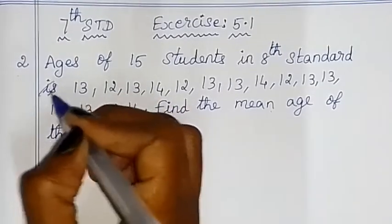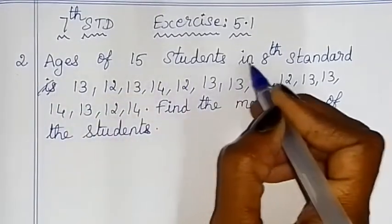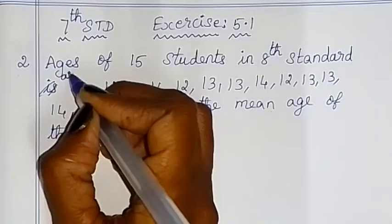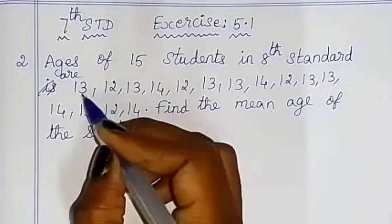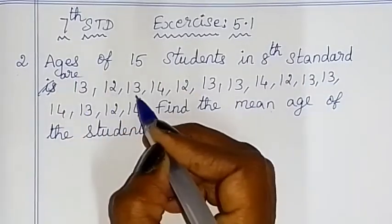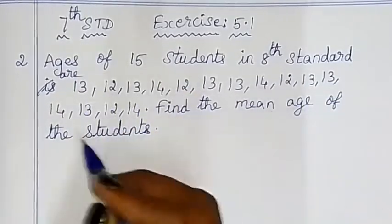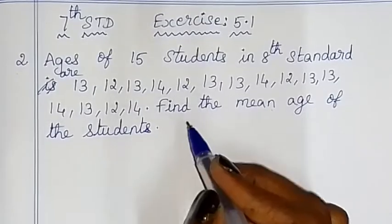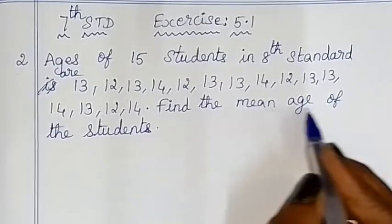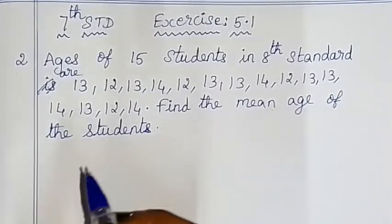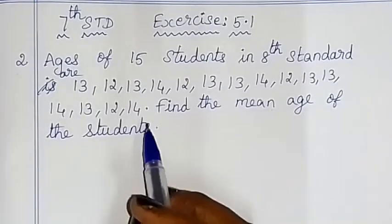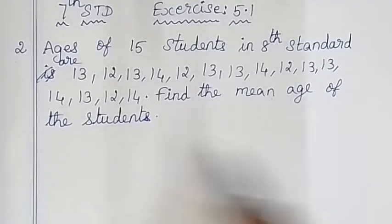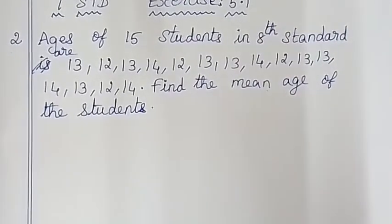Ages of 15 students in 8th standard are 13, 12, 13 and so on. We need to find the mean age of the students. So now we have the mean age, and we will apply the mean formula.